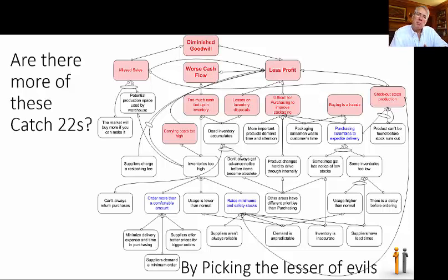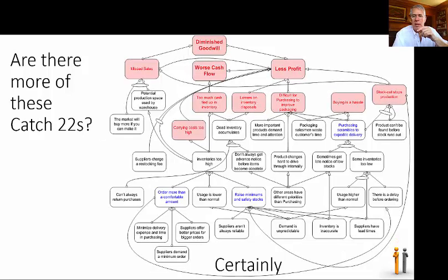So, do you think there are more of these vicious cycles? Certainly, there are. Because they order more than they want to, it increases the delay before ordering, increasing the chance of stocking out, which in turn exerts more pressure on raising inventory. Every cyclic loop viciously makes the customer situation worse and worse.